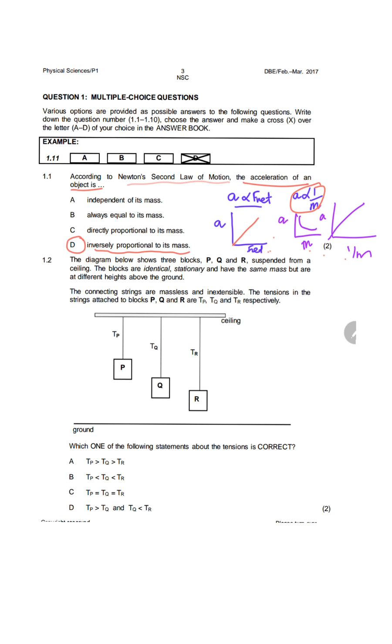the diagram shows three blocks, P, Q, and R, suspended from the ceiling. The blocks are identical, stationary, and have the same mass, but at different heights above the ground. The connecting strings are massless and inextensible. The tensions in the strings attached to block P, Q, and R are T_P, T_Q, and T_R, respectively.